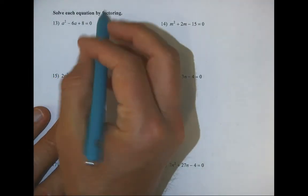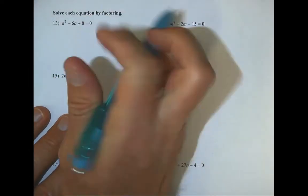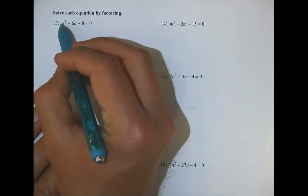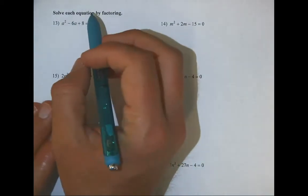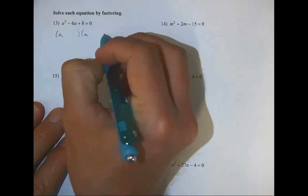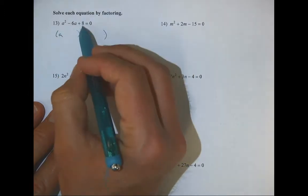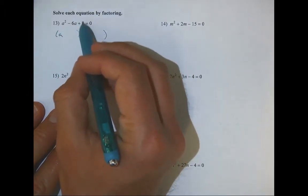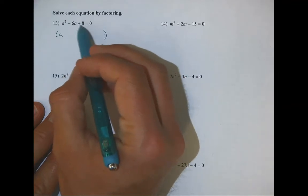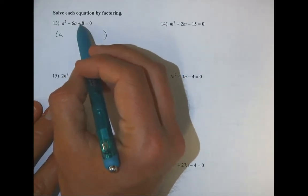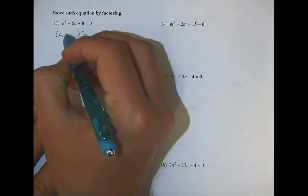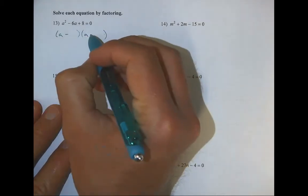Breaking this down, you can ignore the equals zero for now and just try to factor the expression. There's no leading coefficient, which is nice, so we know it's going to be just an 'a' and an 'a' up front. We need to think of numbers that multiply to eight and add to negative six.